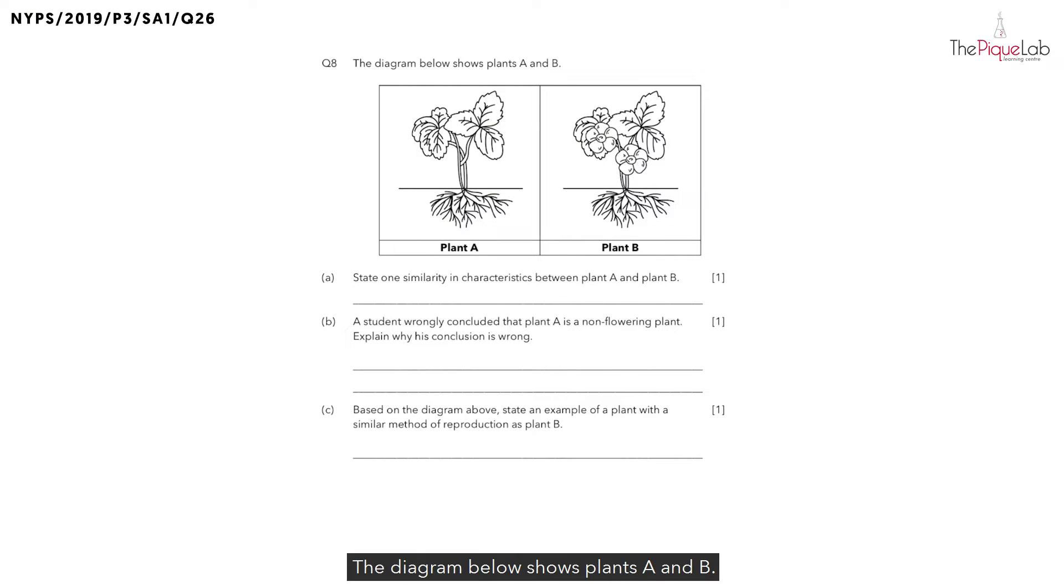Question 8. The diagram below shows plants A and B. Part A asks us to state one similarity in characteristics between plant A and plant B. In this question, the characteristics refer to the plant parts. Let's take a look at the diagrams to see what common plant parts plant A and plant B have. Can you see what's common between the two plants? They both have leaves. Can you see any other common parts?